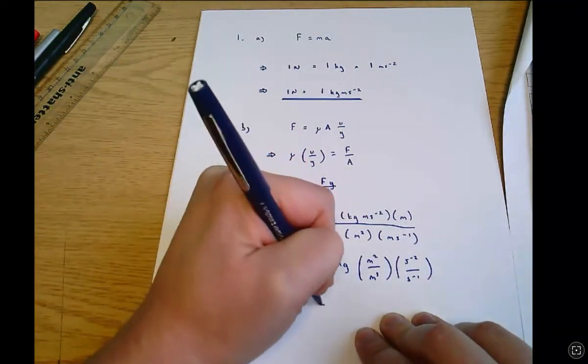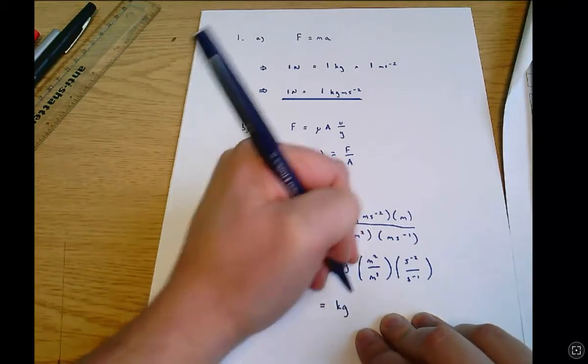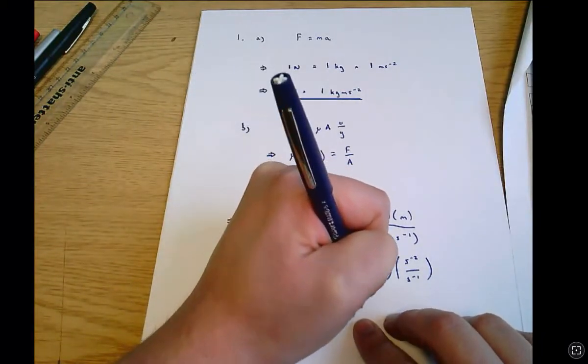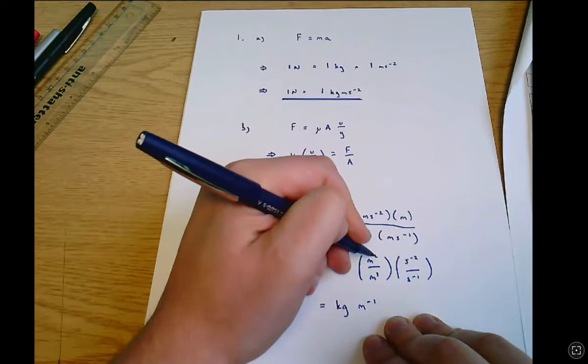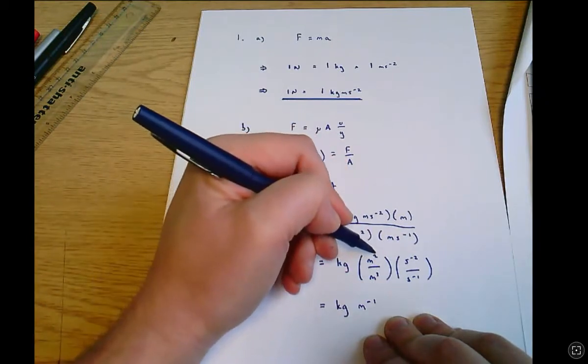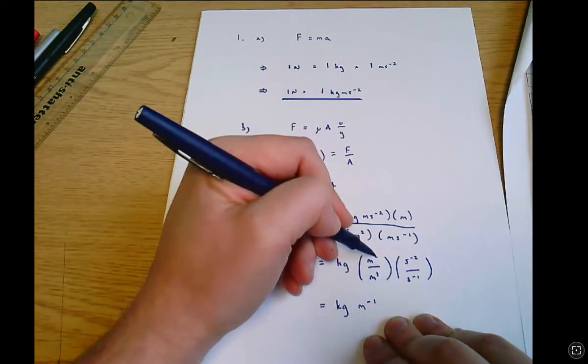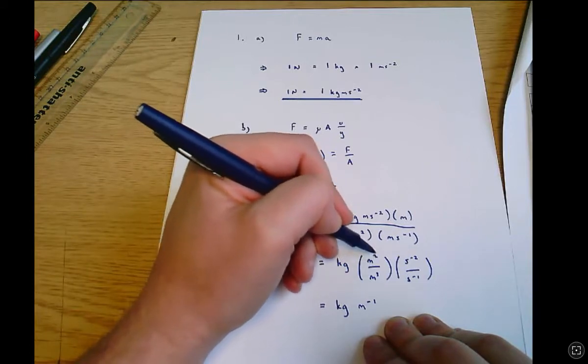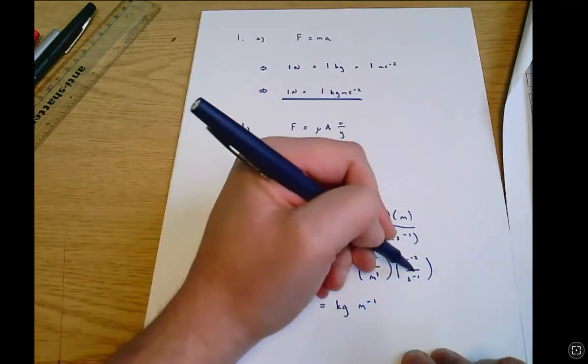And that equals kilograms meters to the minus one, so to get meters to the minus one I subtracted this power from this power, subtract what's on the bottom line from what's on the top line.